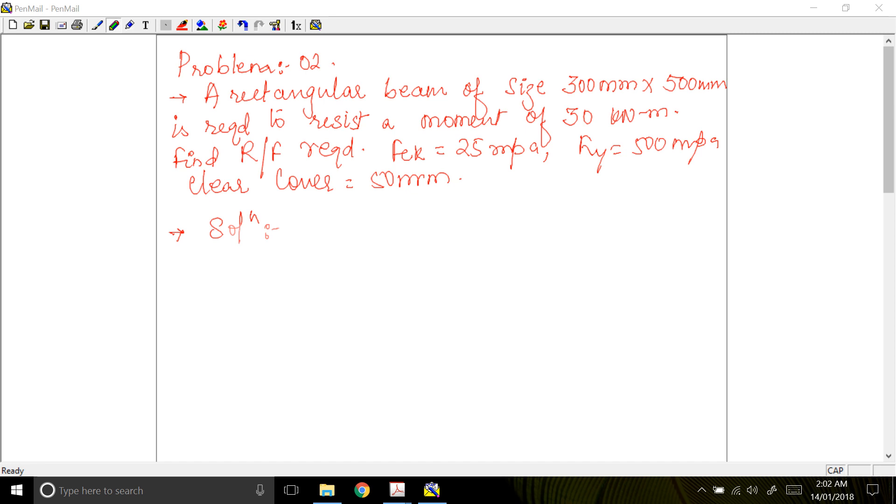The problem is: a rectangular beam of size 300 mm by 500 mm is required to resist a moment of 30 kNm. Find the reinforcement required. Your FCK is given as 25 MPa, that is your concrete grade, and your steel grade is 500 MPa. Your clear cover is 50 mm.